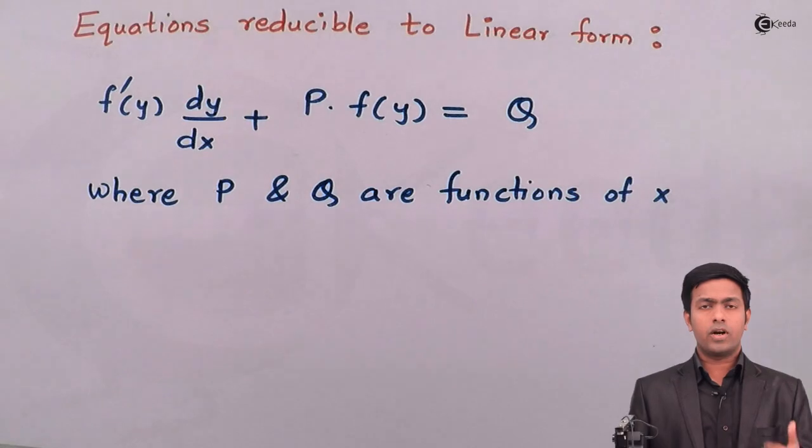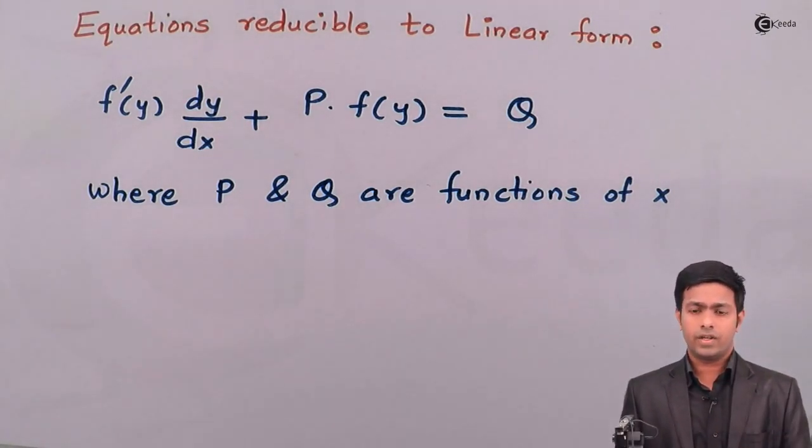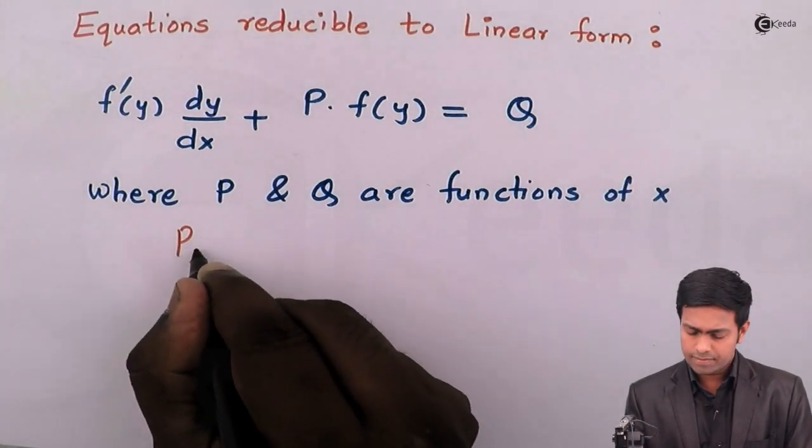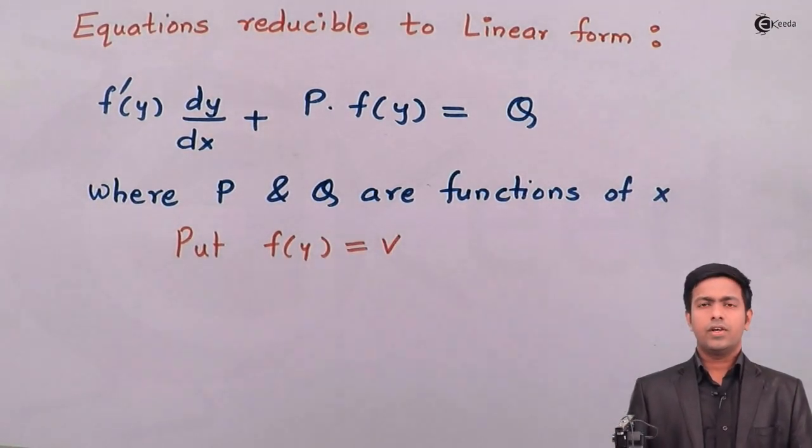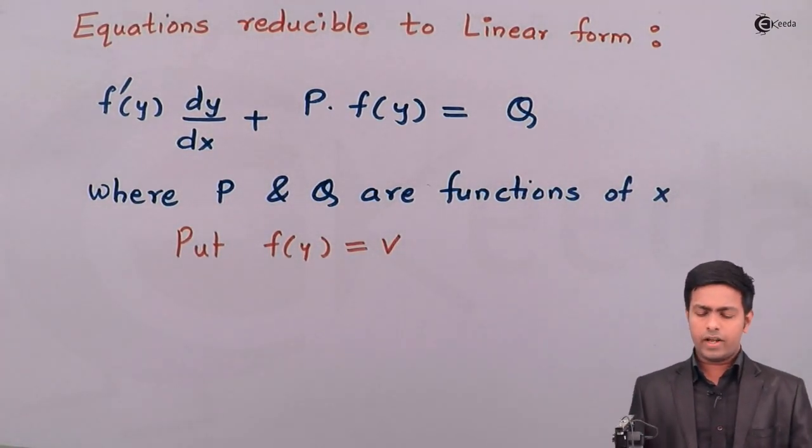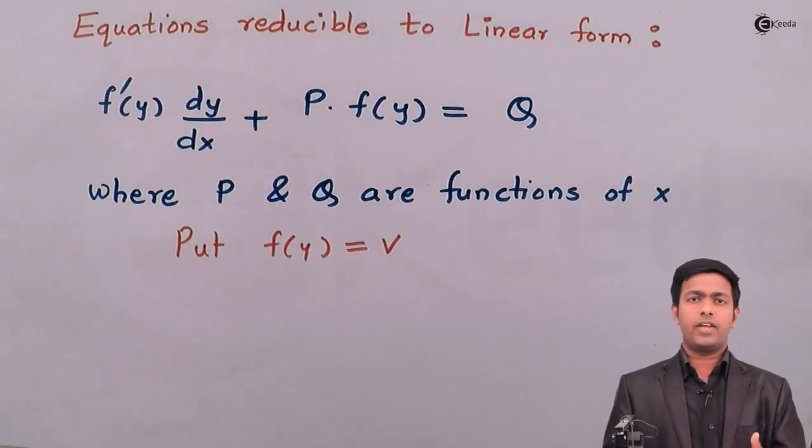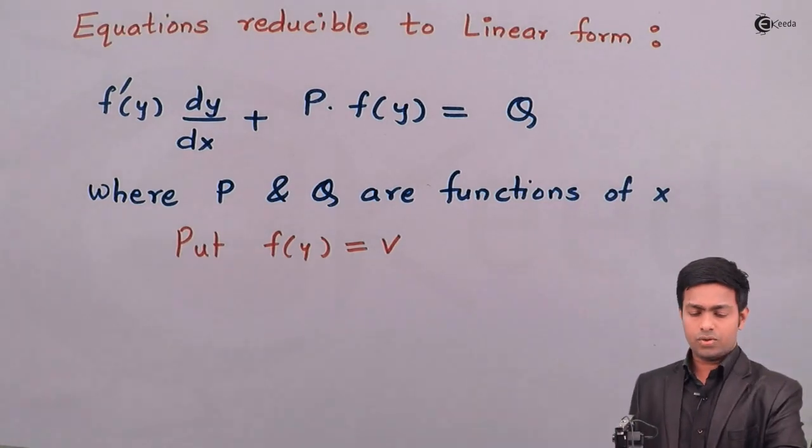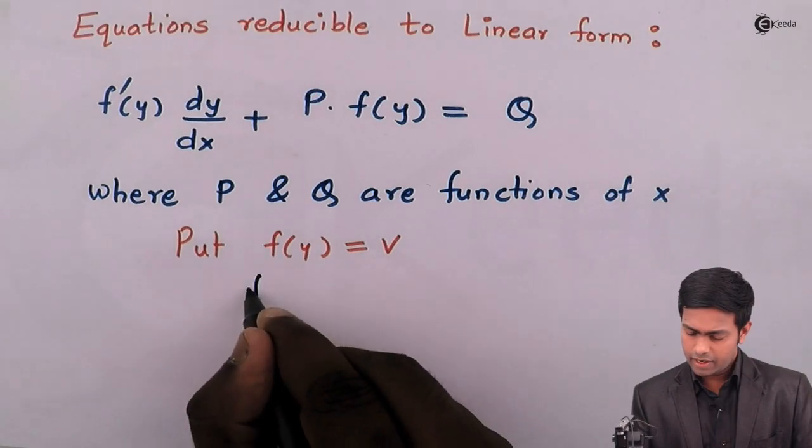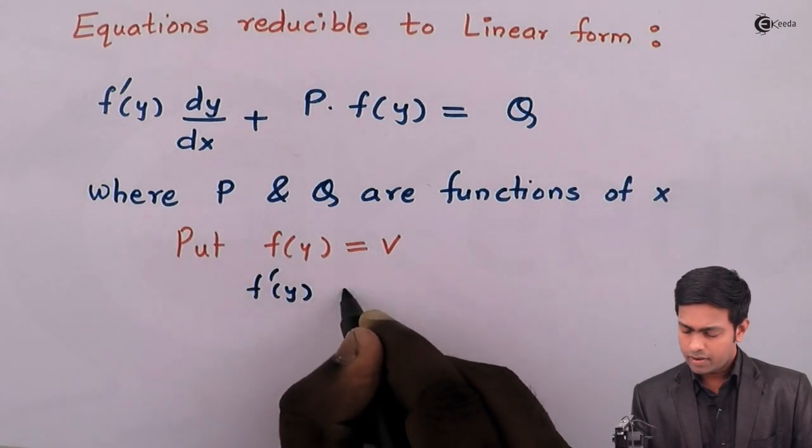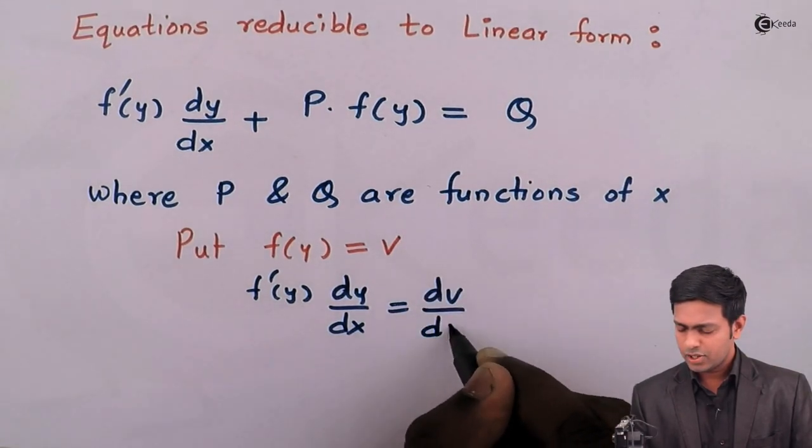Since we have f(y) here, to convert this equation into linear form we generally put f(y) = v. So here I'll say put f(y) = v. By putting f(y) = v, if we differentiate both sides with respect to x, then we can get the linear form. So here differentiating both sides with respect to x, we will get f'(y)dy/dx = dv/dx.